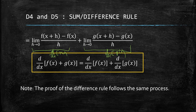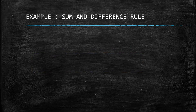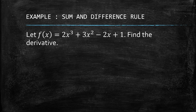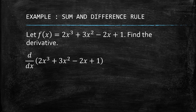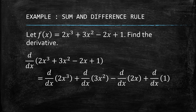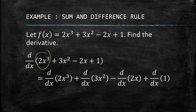The proof of the difference rule follows the same process, so you can prove it on your own for the minus case. Now let's look at an example. If we have the function 2x³ + 3x² − 2x + 1 and we're asked to find the derivative, we apply the sum and difference rule: the derivative is just the sum of the derivatives of each individual term.